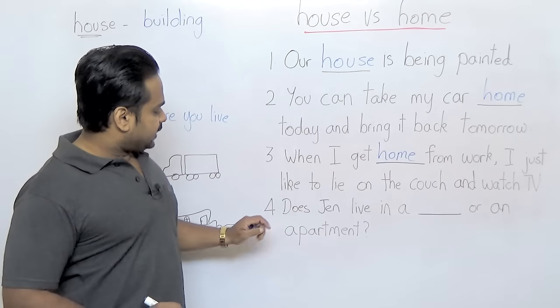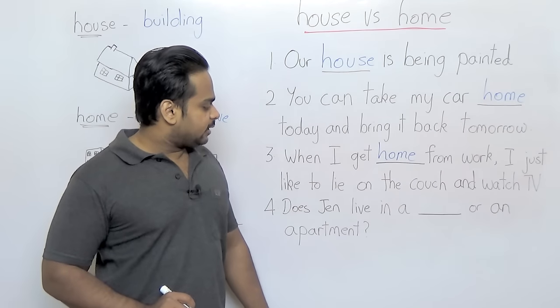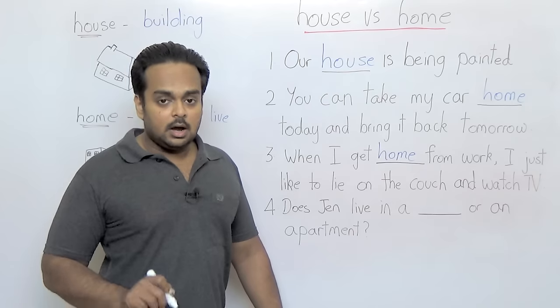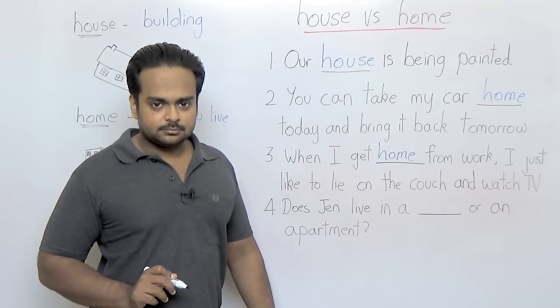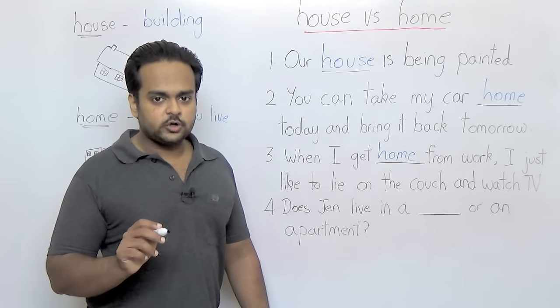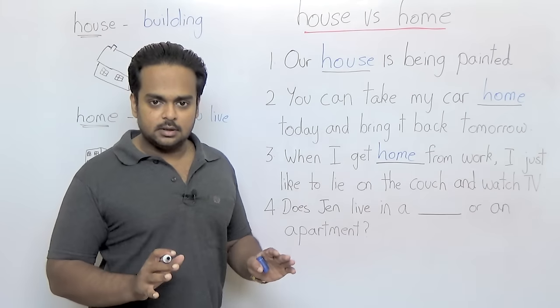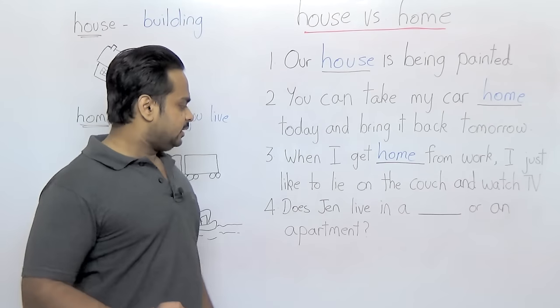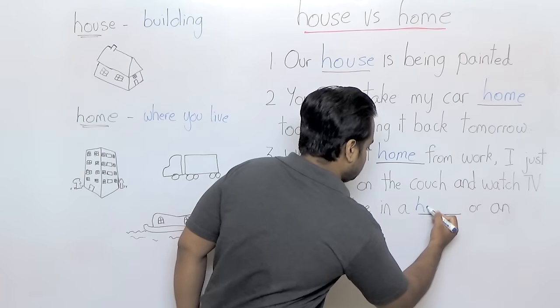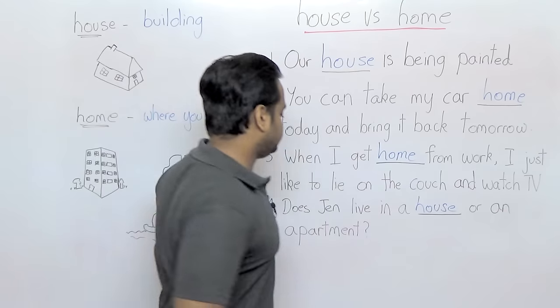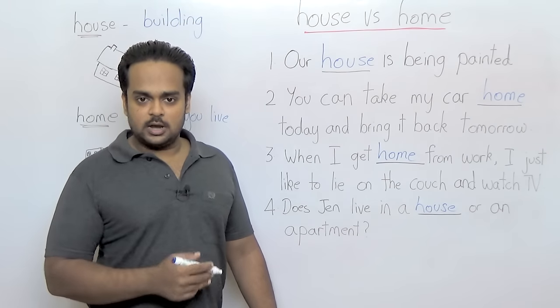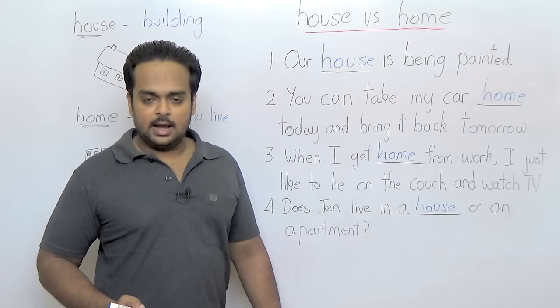And in the last example: does Jen live in a blank? In this case we are talking about the building and here we're talking about the type of building in which Jen lives. So does Jen live in a house or an apartment? Alright, I hope you got all of those correct and I hope that you can now use the words house and home correctly.